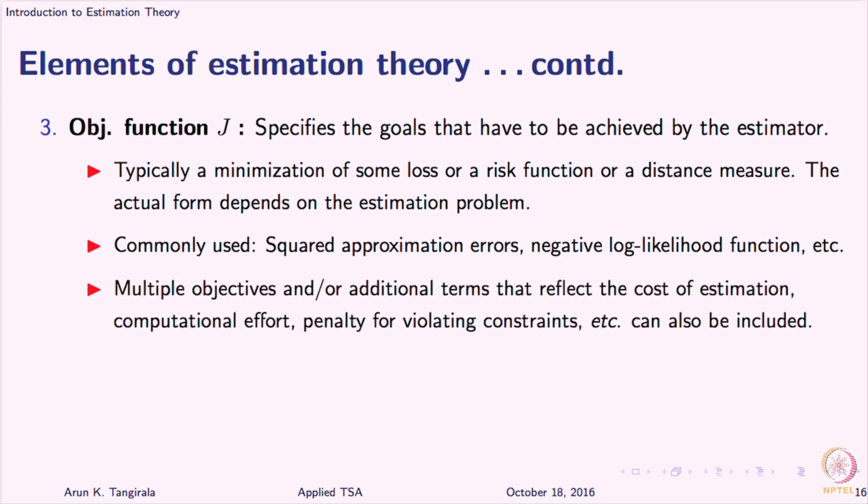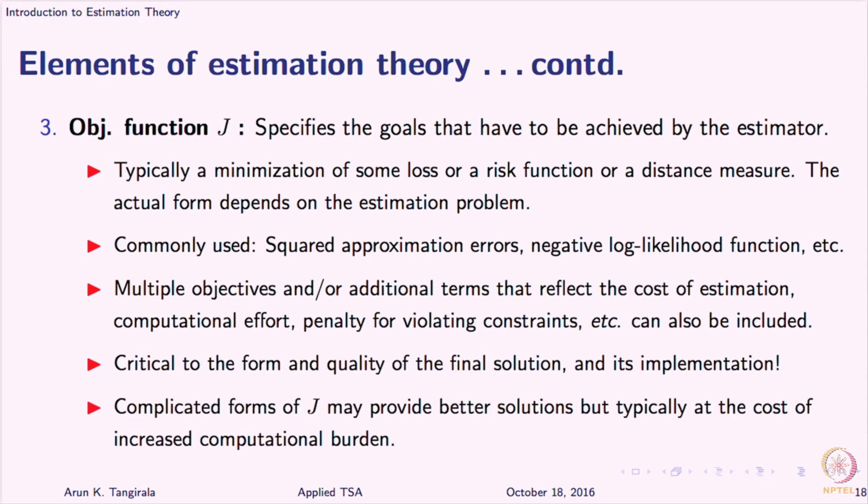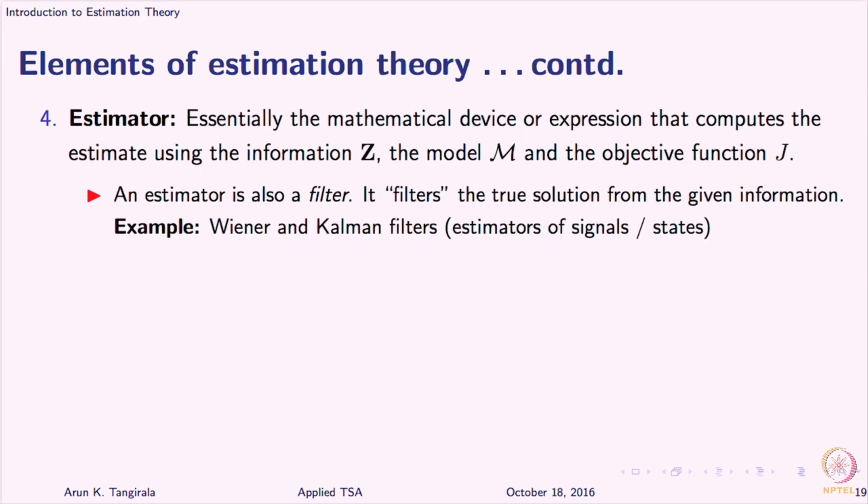In this example that is upcoming, I will show you what impact the objective function can have on the nature of the estimation formula that you end up with, on the form of the estimator that you end up with. So I have already said that some of the commonly used objective functions are squared distances. We will, of course, also look at negative log likelihood function and so on. And, of course, I also said just now that estimator is essentially that mathematical device. It is some formula or expression that computes the estimate using the information, the model and the objective function.